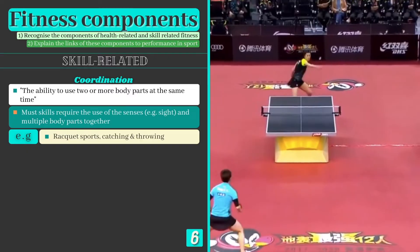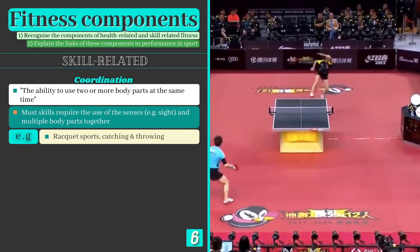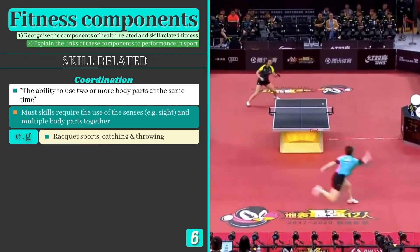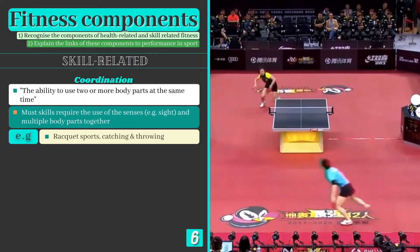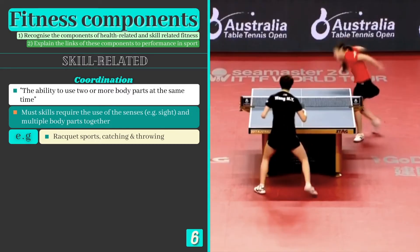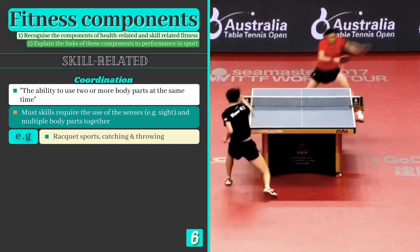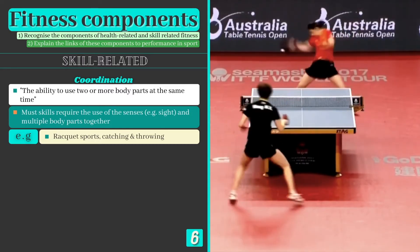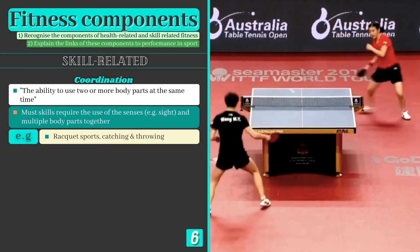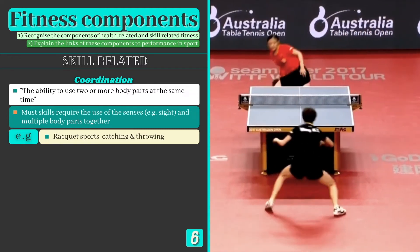Coordination is the ability to use 2 or more body parts at the same time and is essential for most fundamental skills. For example, a table tennis player uses their feet for balance and their arms, hands and eyes to ensure the ball connects with the centre of the bat.